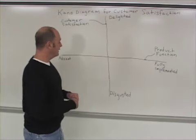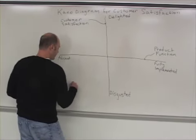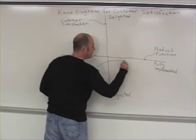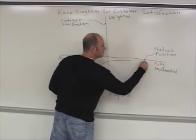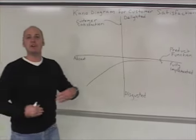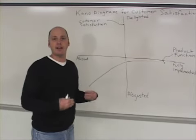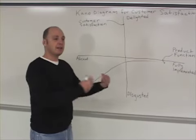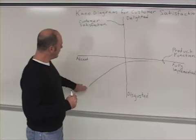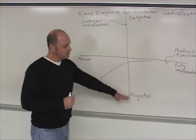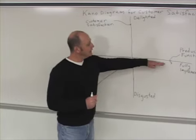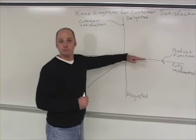The first thing is that you've got basic characteristics. Basic characteristics are those that the customer expected to be part of the design — they expected it to be part of the product. So if it's not there, if it's absent, they're disgusted. Even if it's completely implemented, they're only neutral.